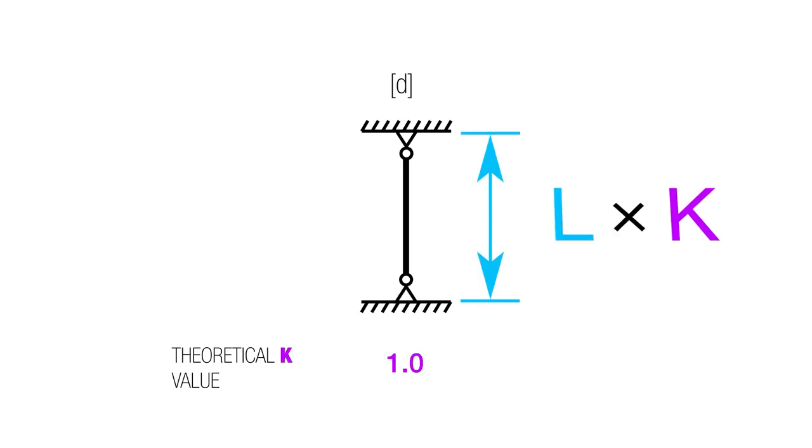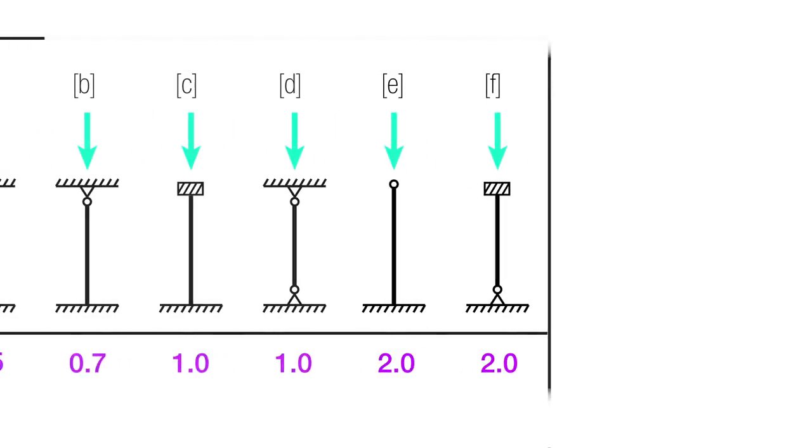And then this is kind of our baseline. We have pin connections at the top and the bottom, which means that it's rotation free and translation fixed. And that's our one. So then if we have a 10 foot column, it's gonna really behave like a 10 foot column.